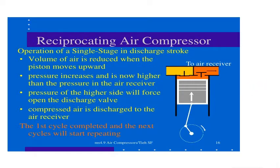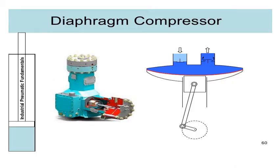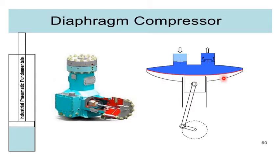Next is the diaphragm type of compressor. Its diagrammatic representation is similar to the reciprocating air compressor, but it uses a diaphragm instead of a piston, as shown in the diagram.